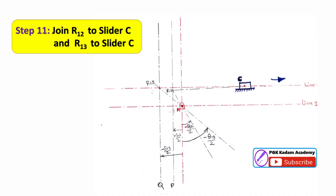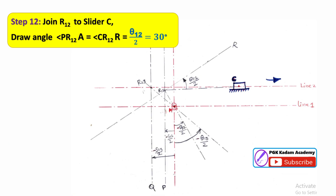Step 11: Join point R12 to slider C, and also join R13 to slider C. Step 12: After joining R12 to C, the angle R12–A is θ₁₂/2 equal to 30 degrees. The angle P–R12–A equals angle C–R12–R equal to 30 degrees. Draw line R at angle θ₁₂/2 equal to 30 degrees.